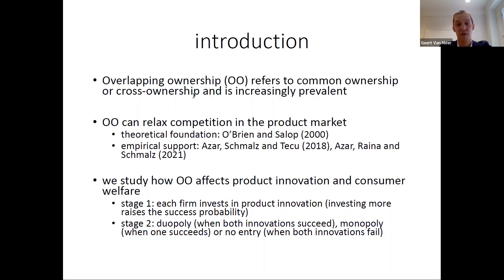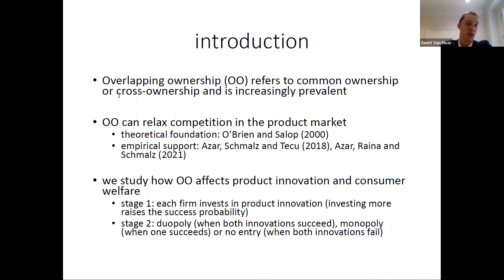The second type is cross ownership, whereby competing firms directly hold financial stakes in one another — competitor A holds a stake in competitor B and vice versa. Both structures share the feature that firms may partially internalize the effect of their own decisions on the rival's profit, either through a common owner or through direct financial stakes.